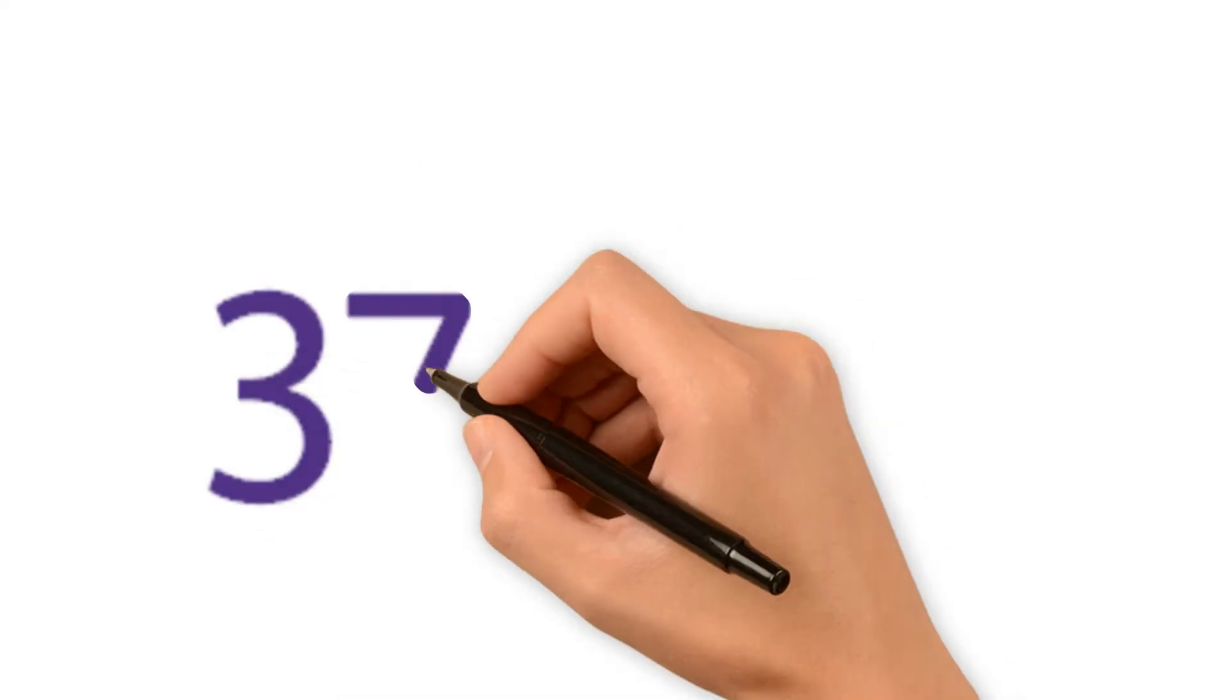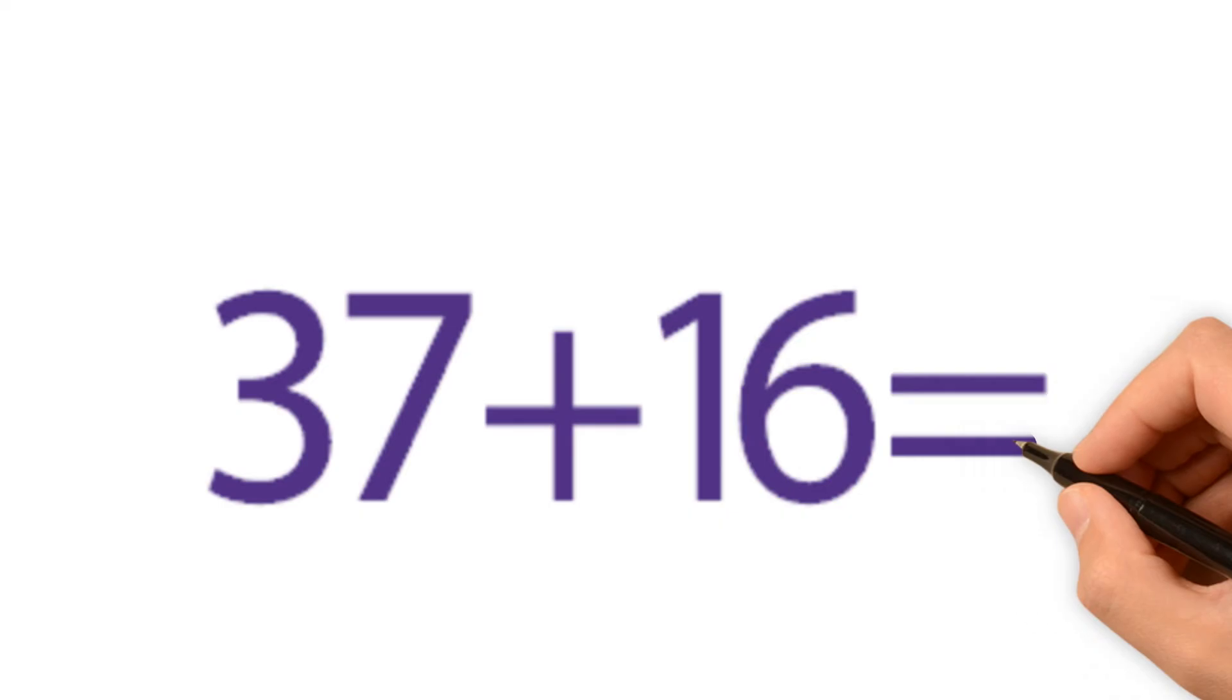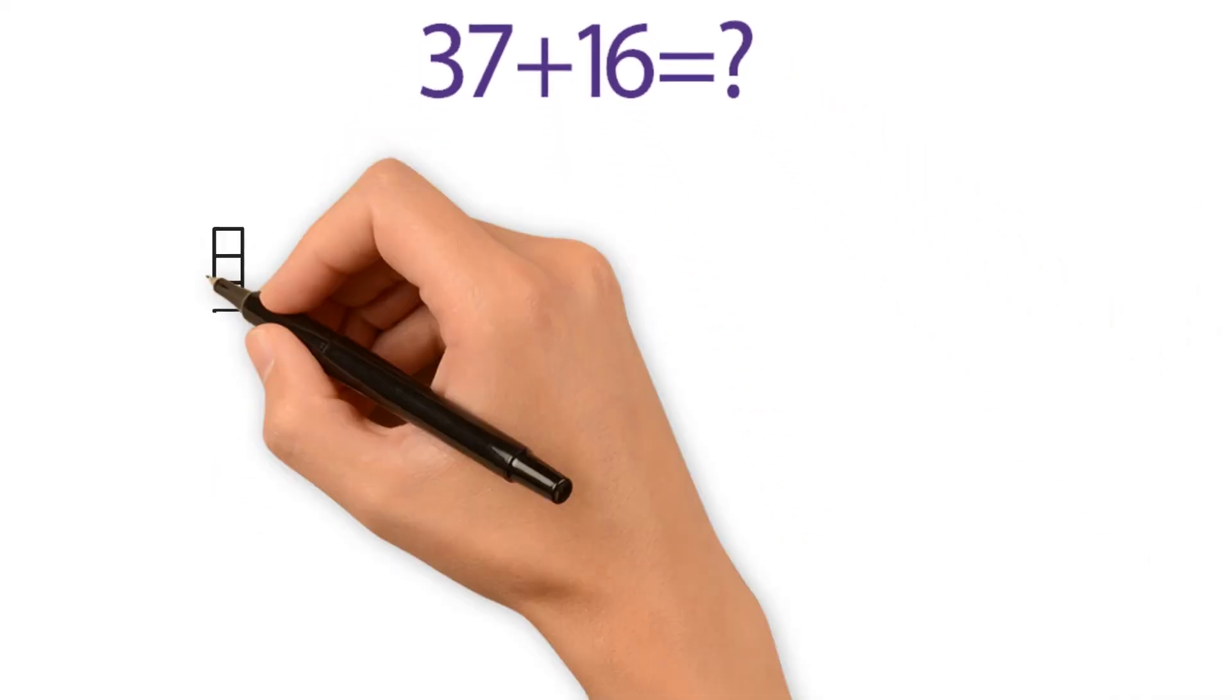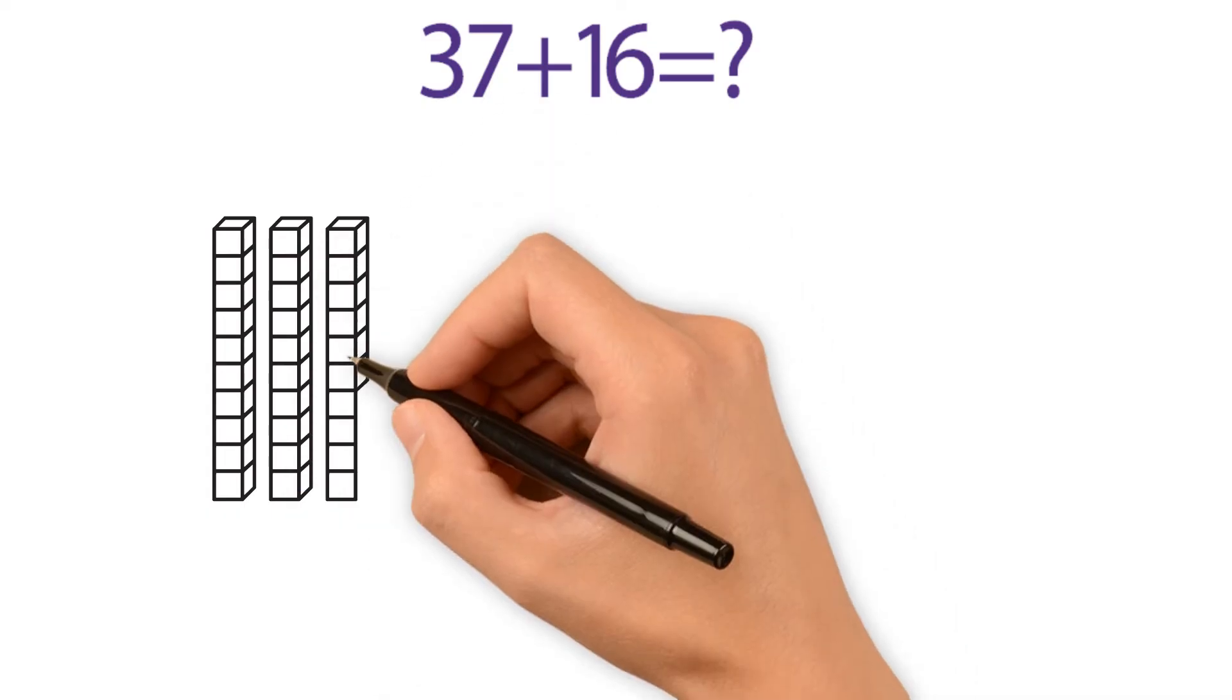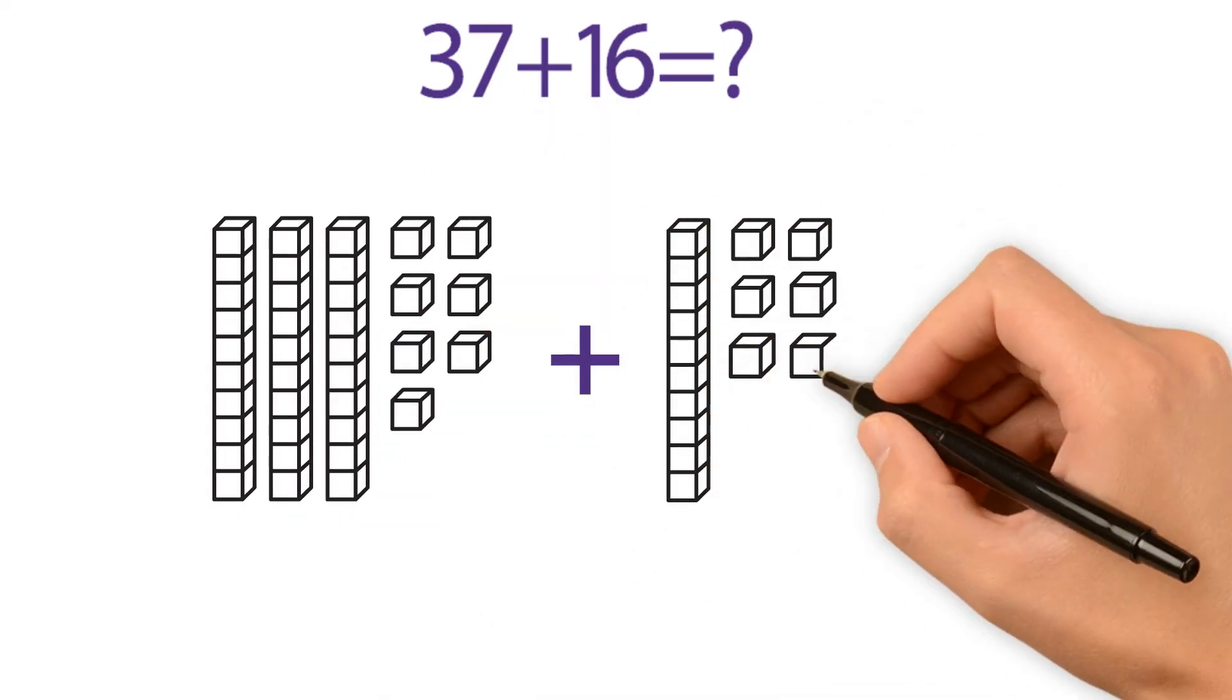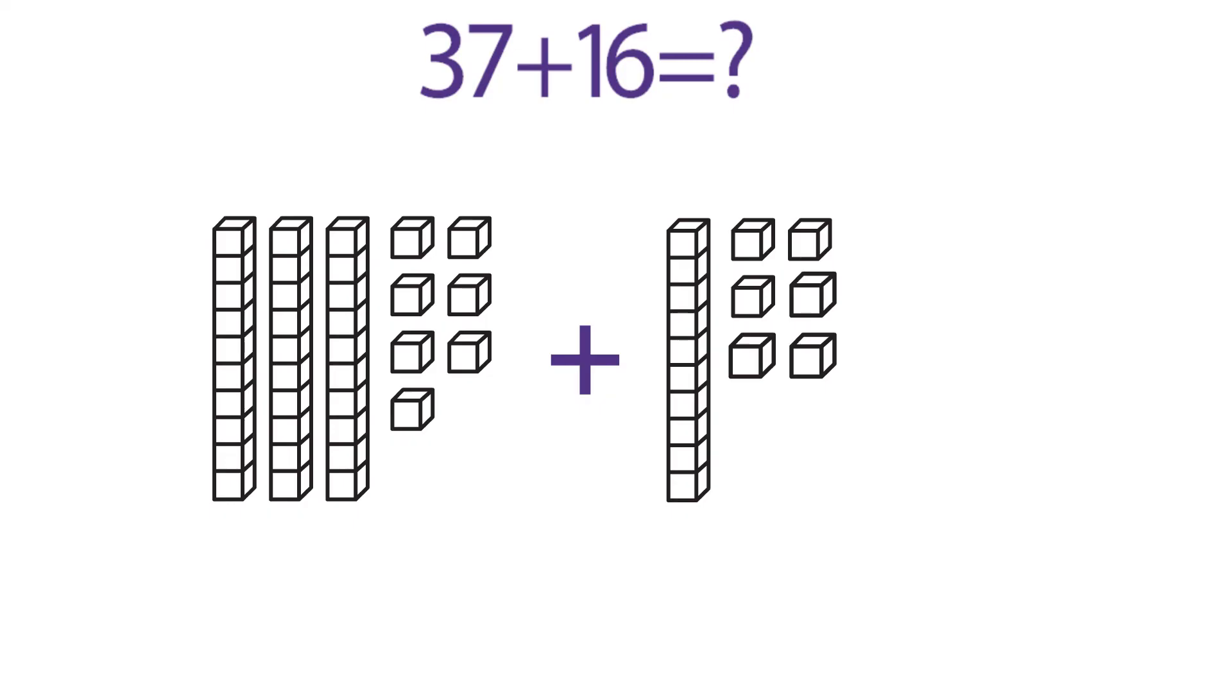Let's try another example. 37 plus 16. 37 has three tens and seven ones. 16 has one ten and six ones. 16 has fewer ones than 37.